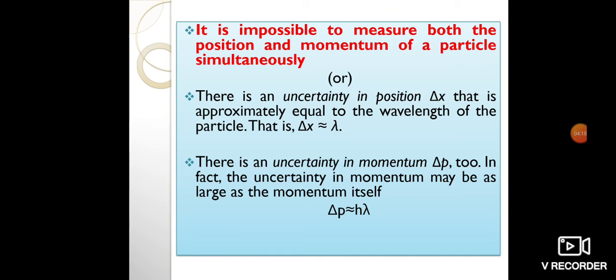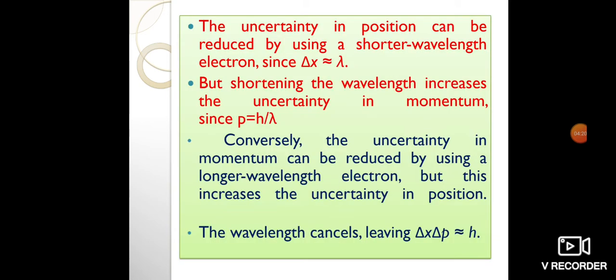Conversely, the uncertainty in momentum can be reduced by using a longer-wavelength electron, but this increases the uncertainty in position. Mathematically, we can express this trade-off by multiplying the uncertainties. The wavelength cancels leaving ΔxΔp ≈ h.